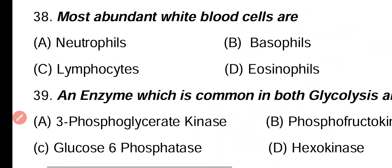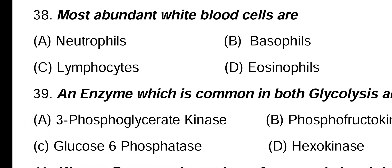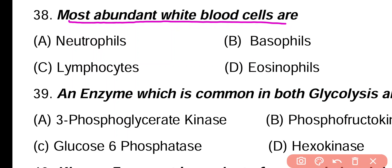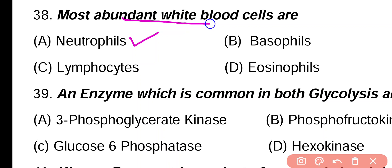Question 38. Most abundant white blood cells are: neutrophils, basophils, lymphocytes, eosinophils. Correct answer is option A. Neutrophils are the most abundant white blood cells.